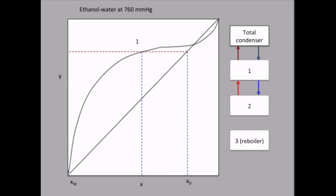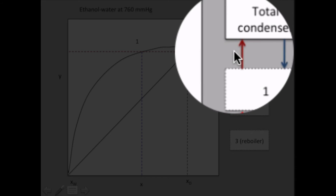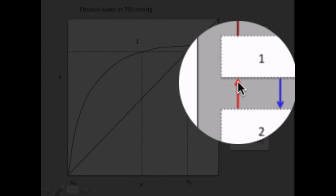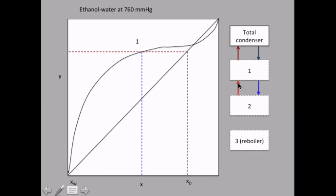Well, we already know the composition of these three flows, and we have only one flow left. So we can solve that by using a mass balance. And under certain conditions, which you can read more about in the compendium, mass balances are straight lines. And if we have total reflux, which we have in the lab, then that line is the diagonal. So this is the mass balance.